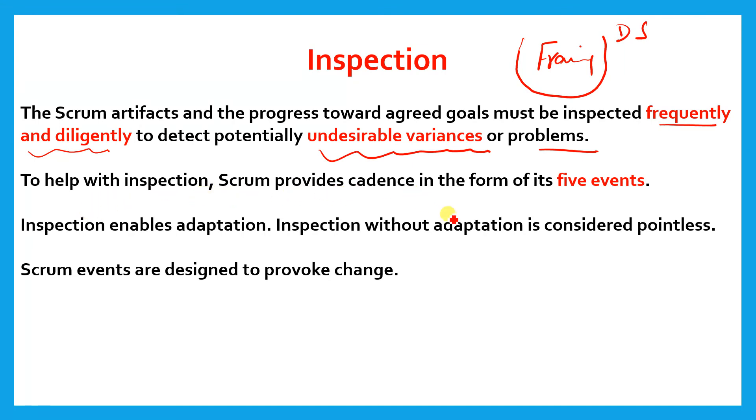To help with inspection, Scrum provides guidance in the form of five events. You now know about the events — there are five — but we will discuss them in detail later.